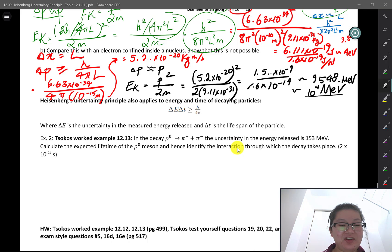Hey, welcome back to Fat Mama Physics. In this video, we're going to do a quick example on Heisenberg's uncertainty principle in terms of the uncertainty in the measured energy of a released particle and the lifespan of this particle, especially in nuclear decays.